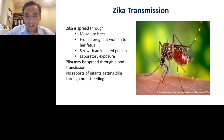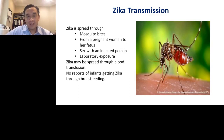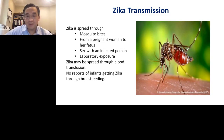The Aedes aegypti mosquito has been most commonly associated with Zika transmission. However, there has also been described vertical transmission of Zika virus from a pregnant woman to her fetus, in some cases resulting in severe neurological consequences such as microcephaly. Sexual transmission has also been described — both male to female and female to male — which is unusual as it has not been described for other flaviviruses. Zika has also been shown to spread through blood transfusion, though there are no reports of transmission through breastfeeding.